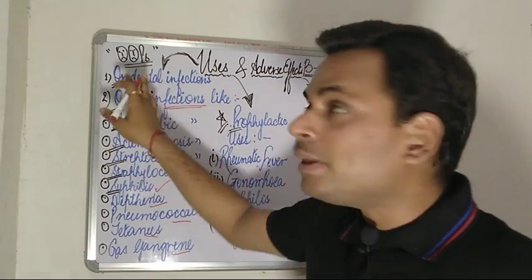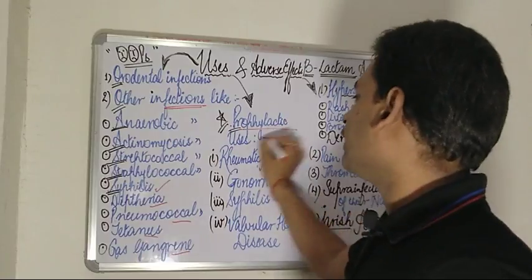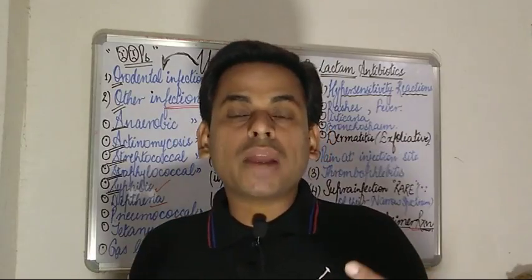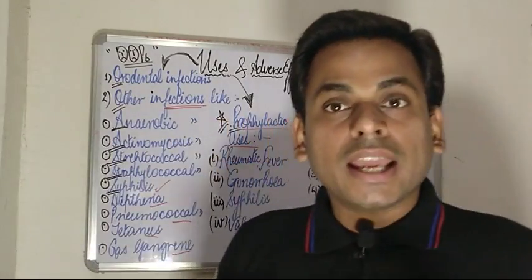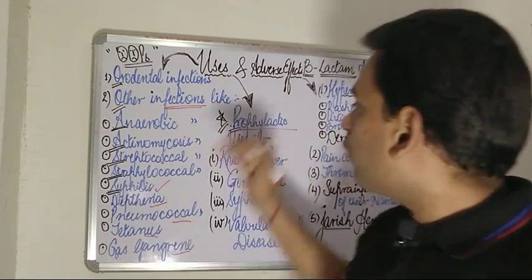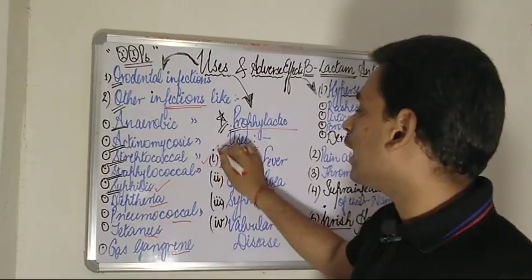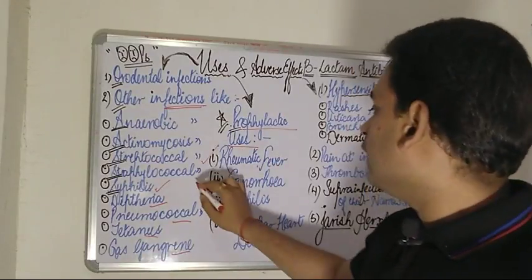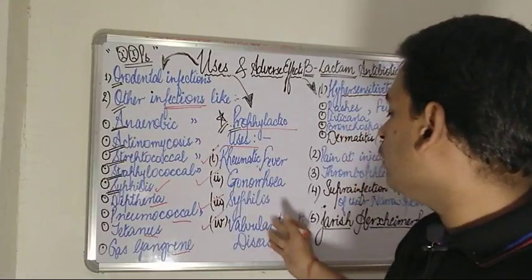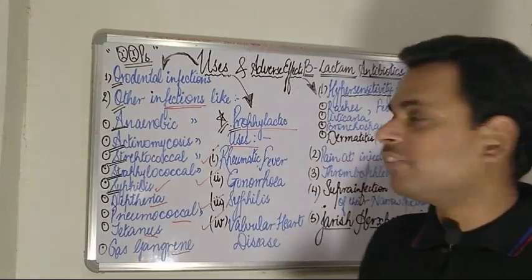The 'P' in OOPS refers to prophylactic uses — those uses where we administer a particular drug to prevent a disease before it occurs. Prophylactic or preventive uses include conditions such as rheumatic fever, gonorrhea, syphilis, and valvular heart diseases, where beta-lactam antibiotics find their wide use.